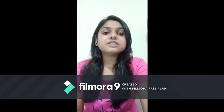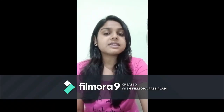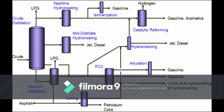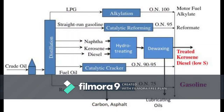Physical processes used in petroleum refining are dehydration, crude distillation, propane de-asphalting, solvent extraction, de-waxing, and blending. Catalytic processes used in petroleum refining are fluid catalytic cracking, hydrotreating, hydrocracking, catalytic reforming, alkylation, polymerization, and isomerization. So isomerization is one of the catalytic processes used in petroleum refining.